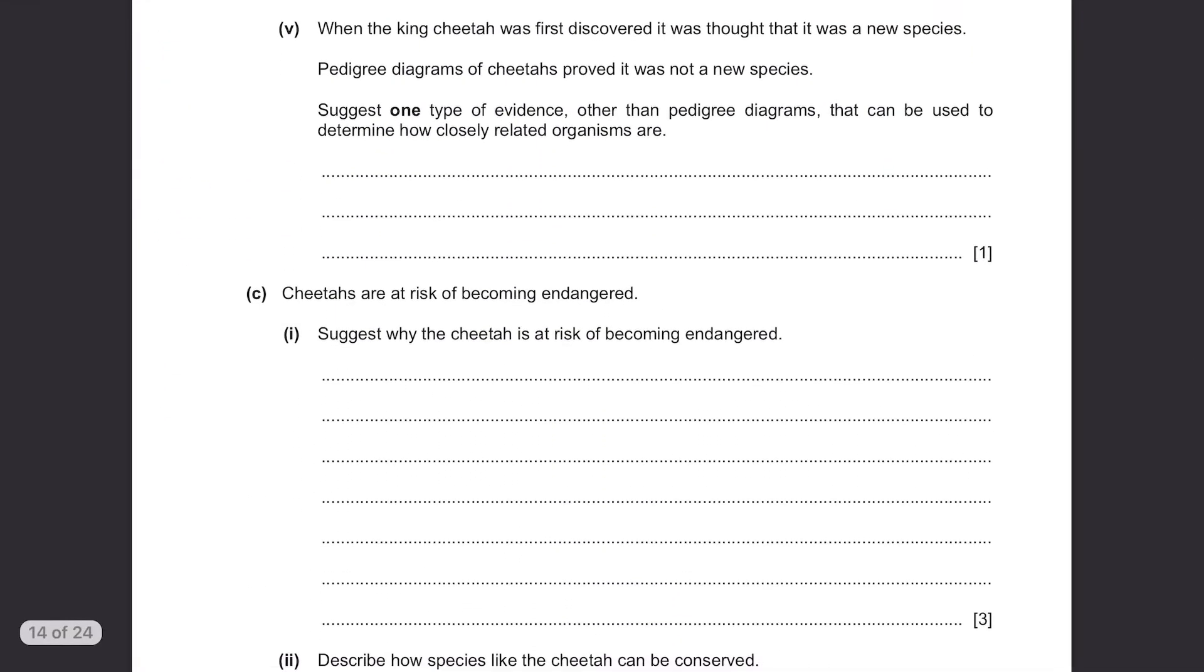When the king cheetah was first discovered, it was thought that it was a new species. Pedigree diagrams of cheetahs proved it was not a new species. Suggest one type of evidence other than pedigree diagrams that can be used to determine how closely related organisms are.